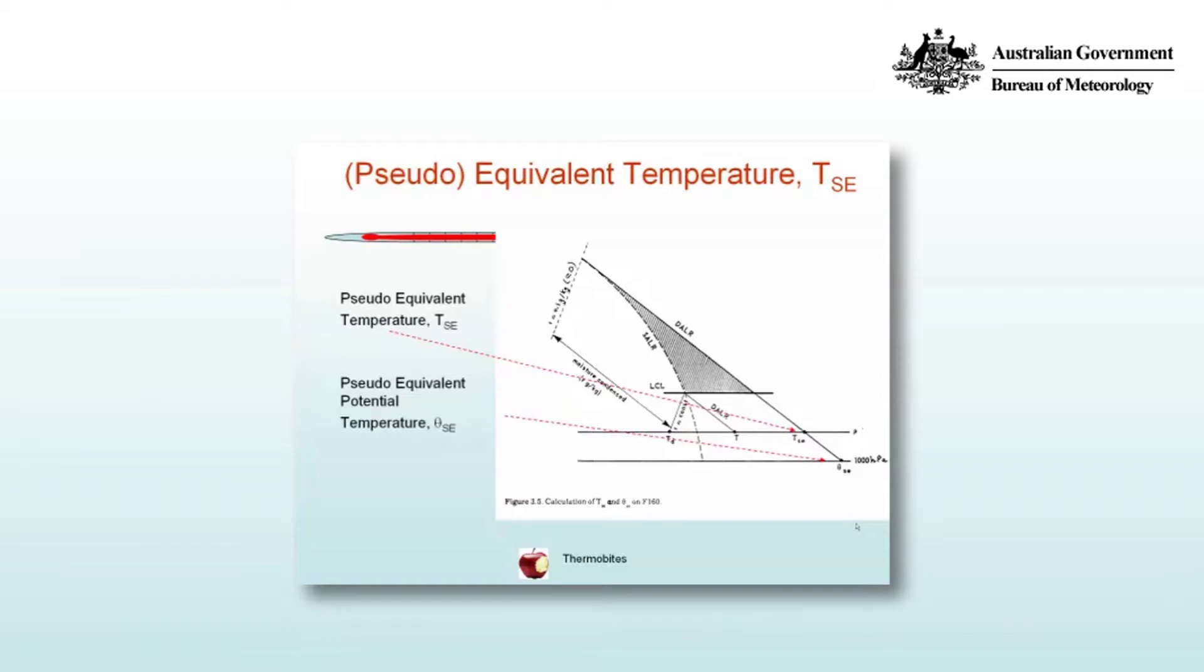If you lift it all the way right to the top of the diagram, then the mixing ratio will be approximately equal to zero and you'll have condensed out R grams per kilogram of moisture.